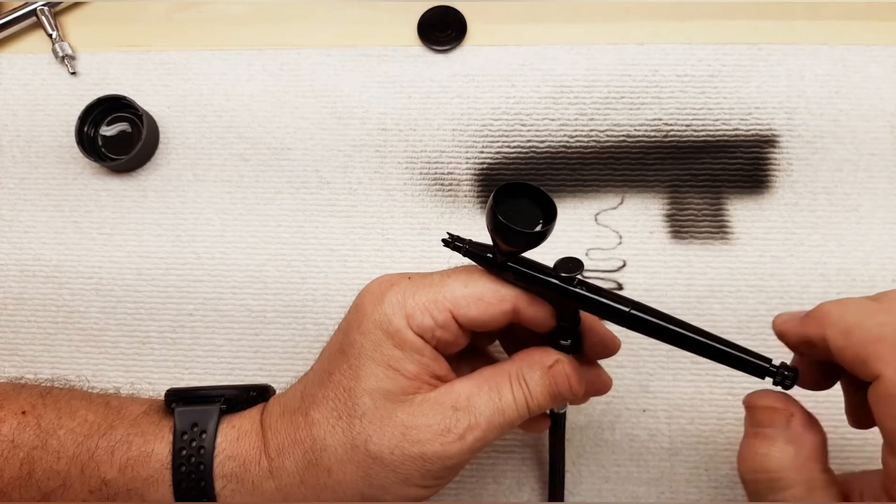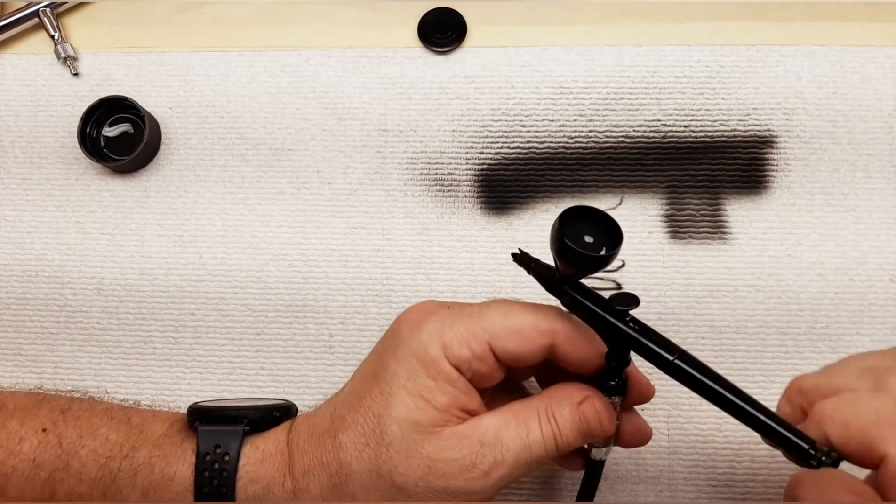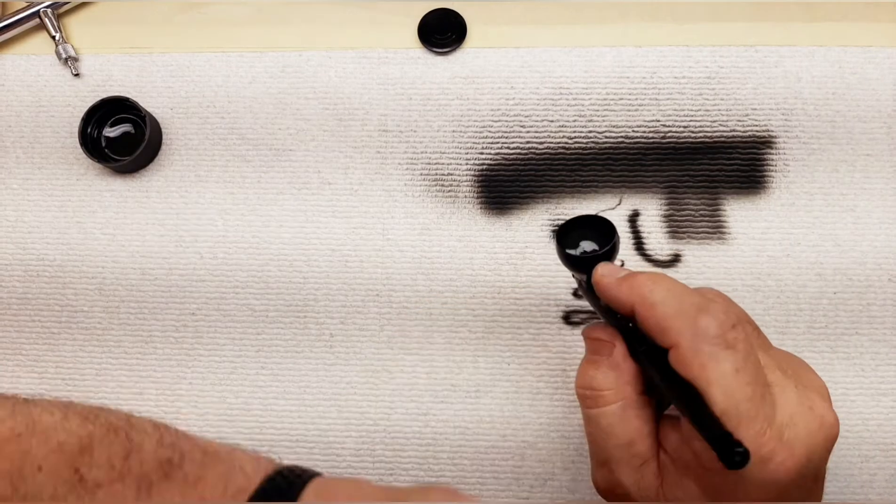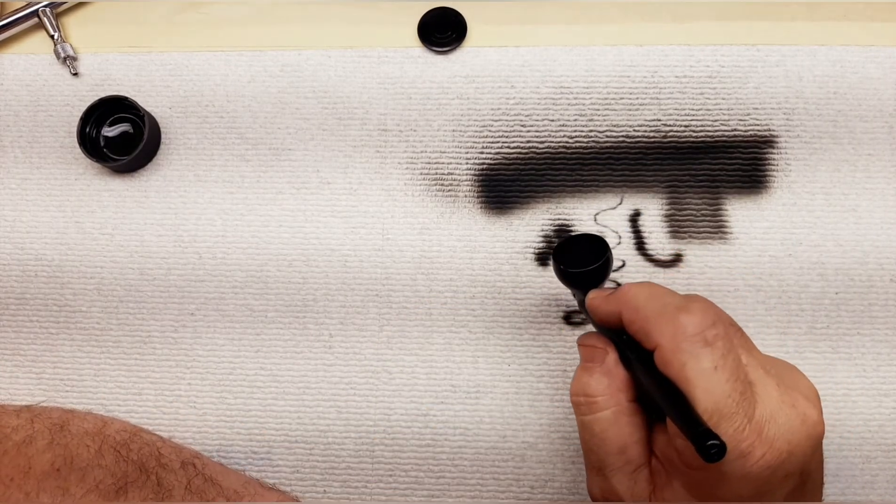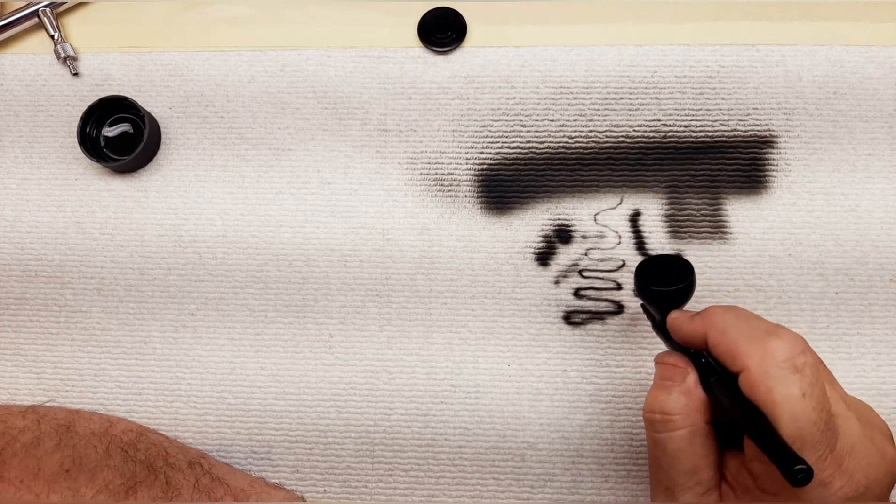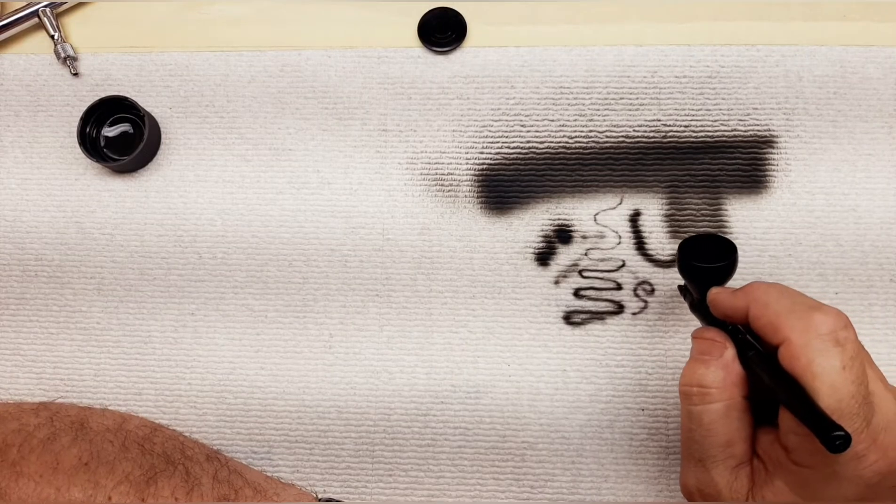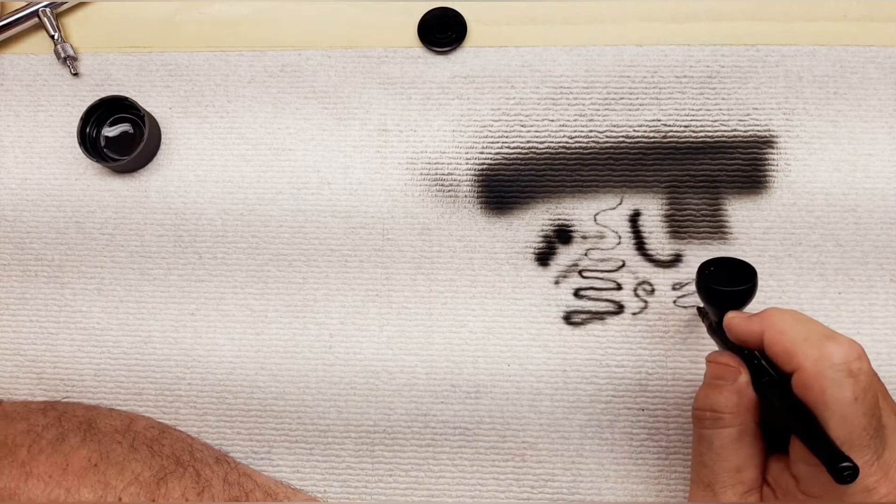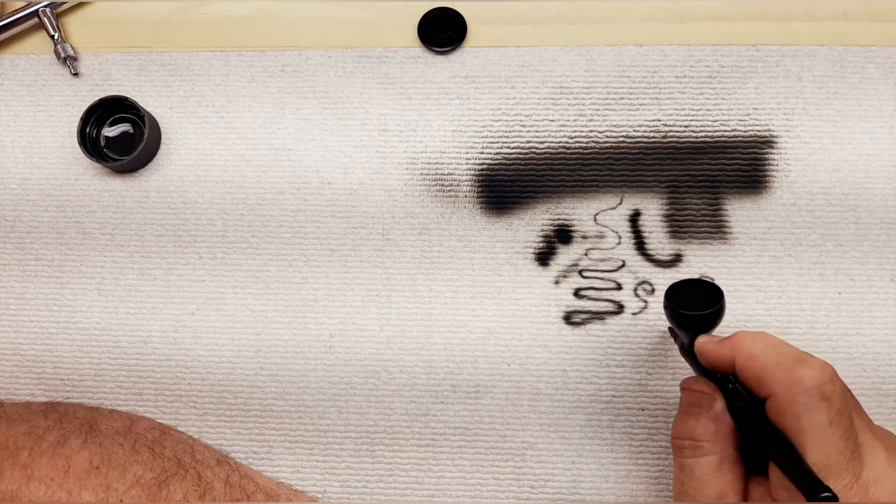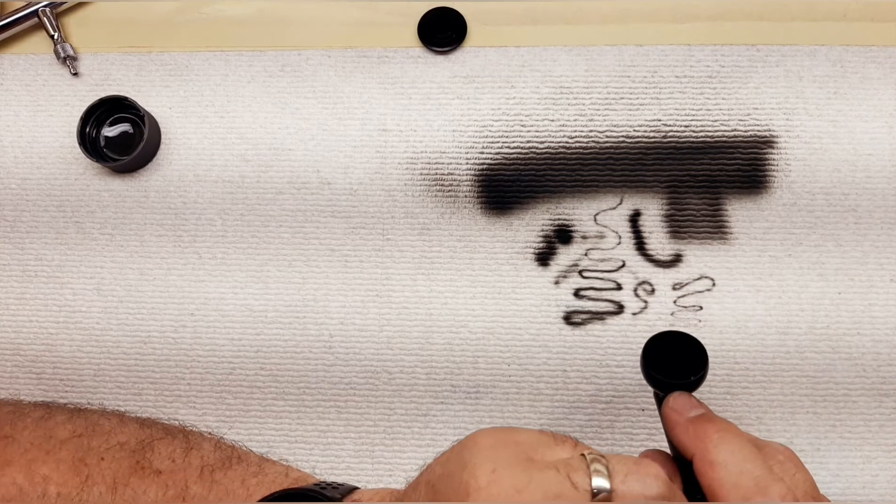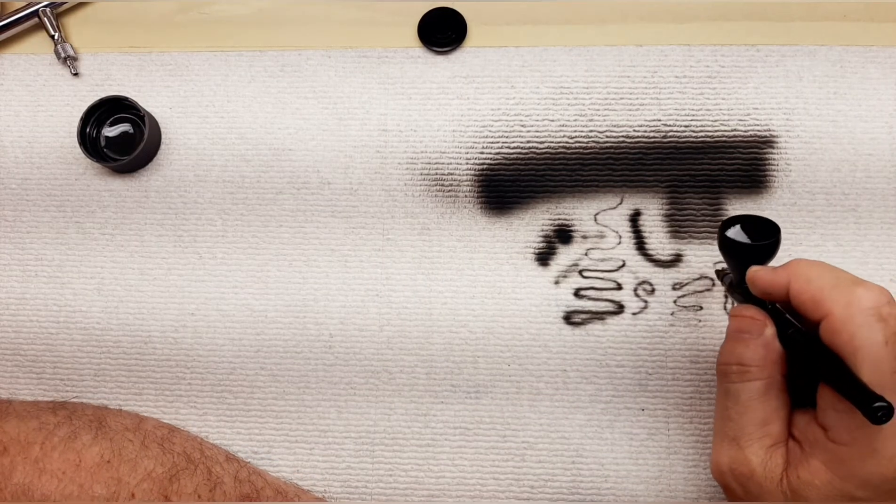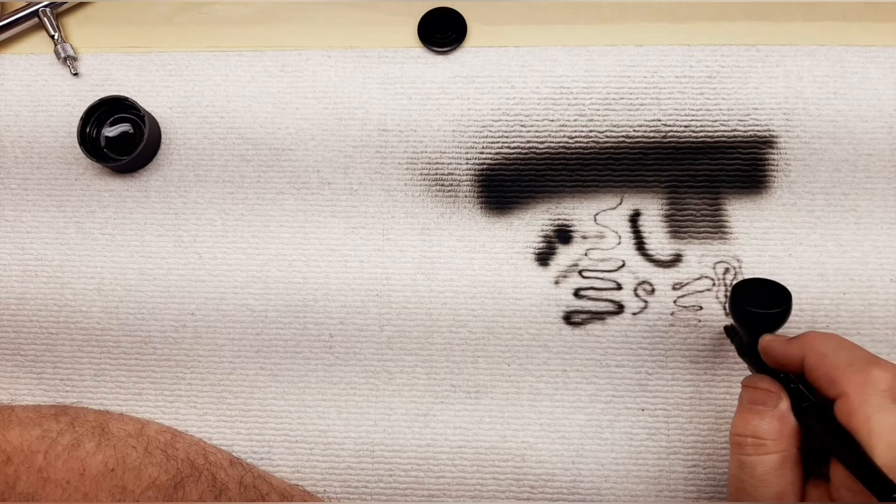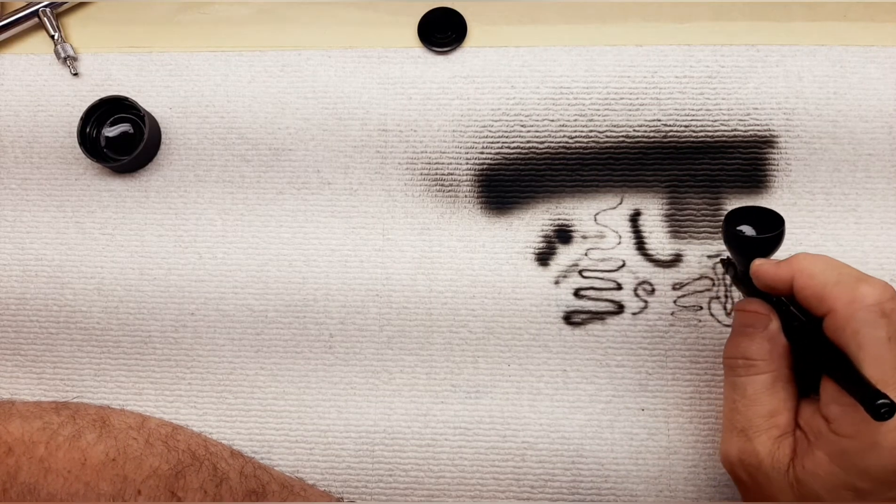The nice thing about this is you have this adjustment. You can tighten this in and then you can control how much paint you want coming out. That's the main reason I also got this. So you can set it to however much you want. I've pulled all the way back, you can tighten it down a little more. I've run about two bowls of paint through it so far, and I've had no issues with clogging or gumming up. It seems to work quite routinely without any issues.